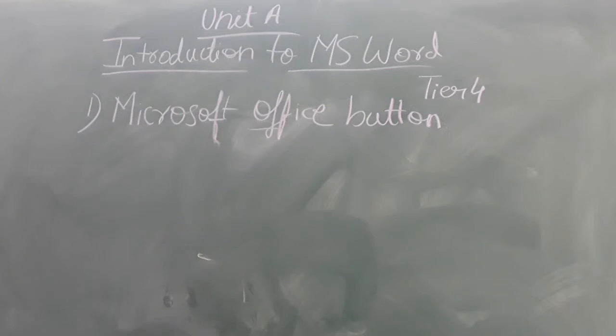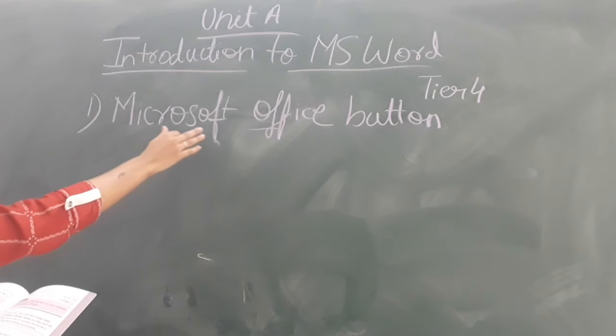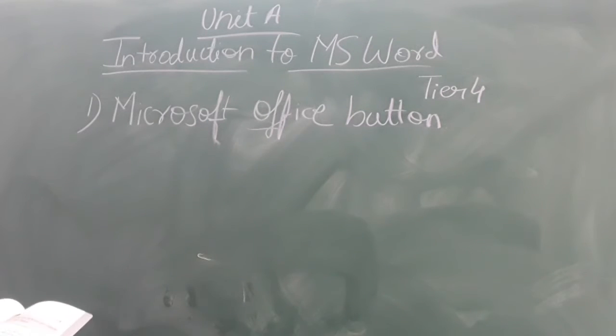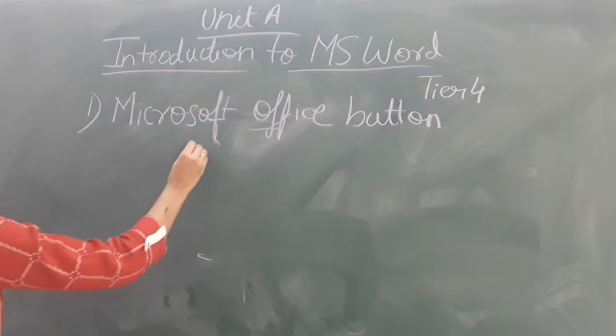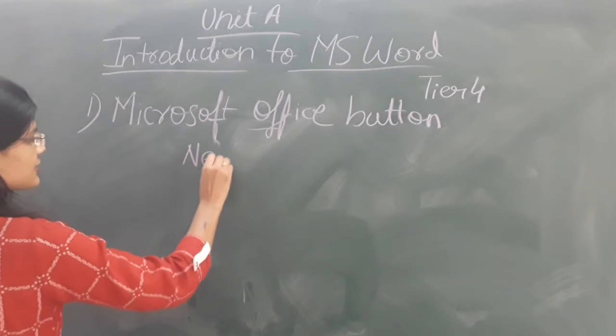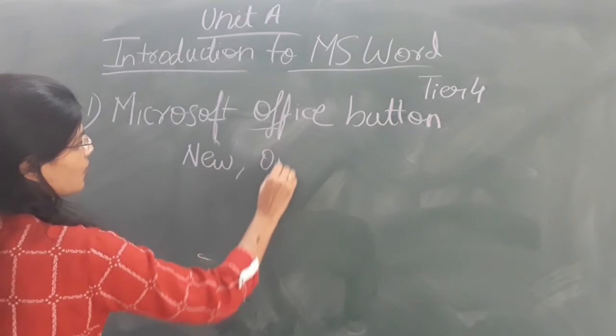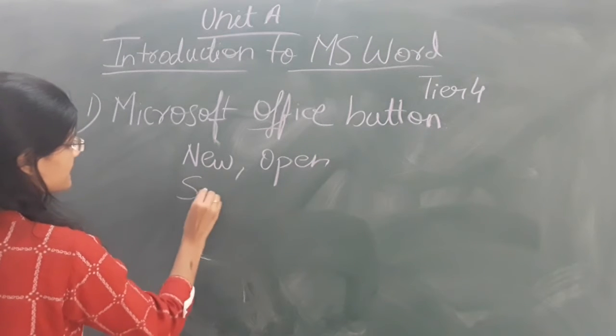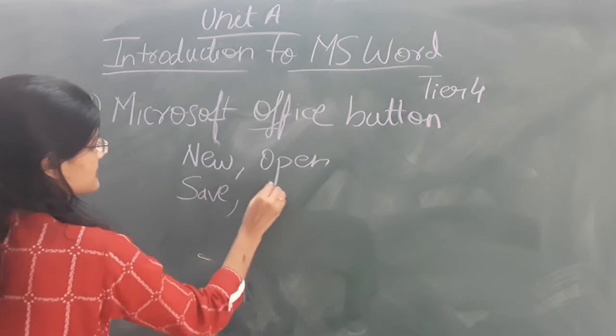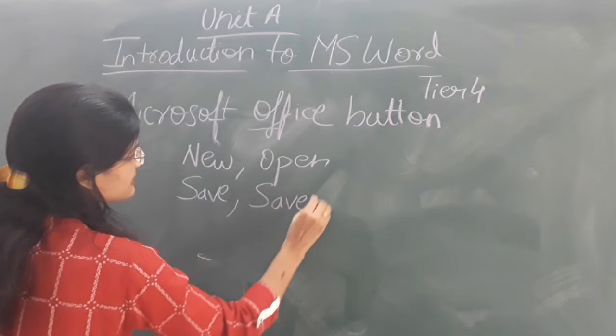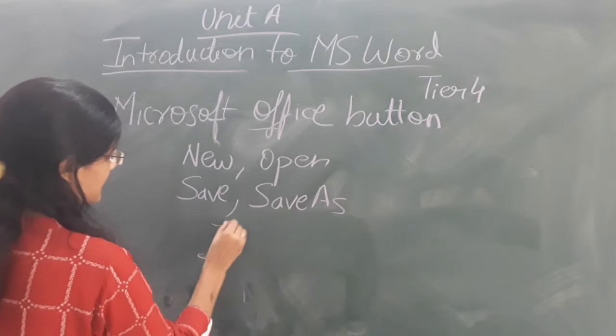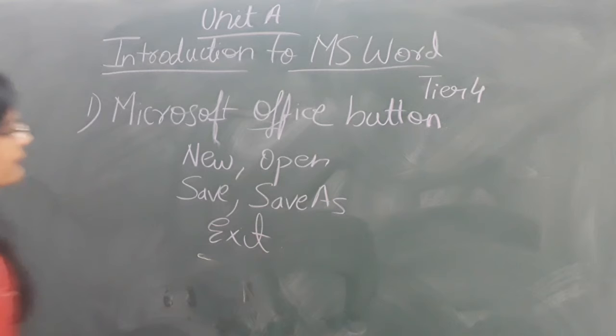Now these Microsoft Office Button are containing. Clicking on this mouse button will display a list of commands which relate to the different options. There are different options present under it, that is new, open, save, save as, exit. So you can perform these functions with these buttons without clicking on the file menu.